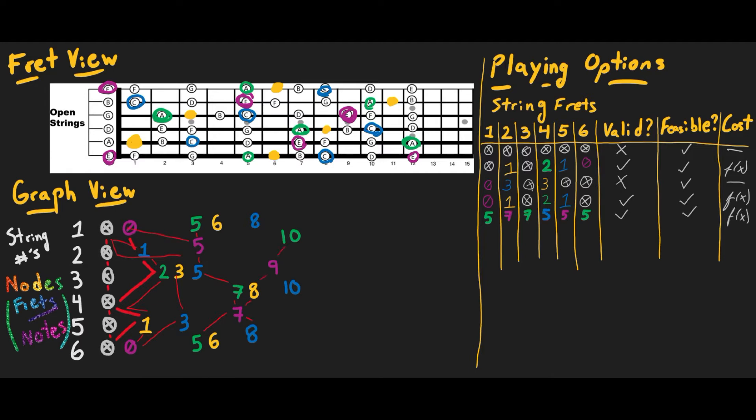The next challenge to finding a solution is the problem that fretting schemes can't be selected in isolation. By and large, the difficulty in playing a song comes from the transitions between hand positions, and so the choice of any one scheme for any one chunk is also dependent on the neighboring chunks. Again, graph algorithms were the key to a solution here.